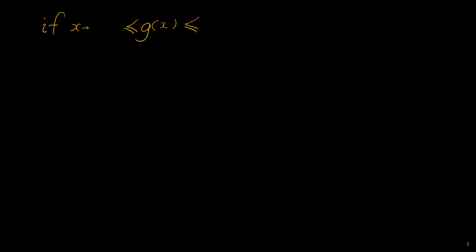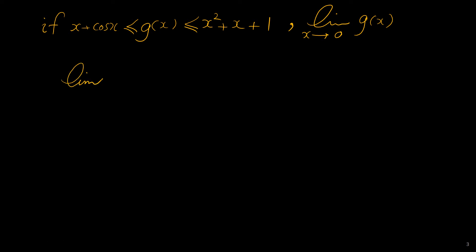Another example: if g of x is between x plus cosine of x and x squared plus x plus 1, what is the limit of g of x as x approaches 0? Again, because we have no idea what the function g of x is, we are using the squeeze theorem. First, we have to find the limit of the left function and right function as x approaches 0.